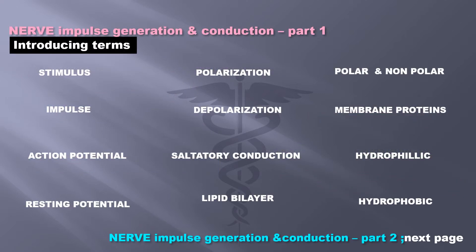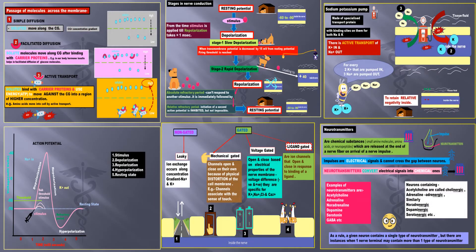To understand these theories better, you may check out my video on nerve impulse generation and conduction part 1, which explains all these topics. You can press the pause button to have a look. There is also a part 2 of the same video covering related topics. Considering that you know all these things or most of it, let us start with the first theory.